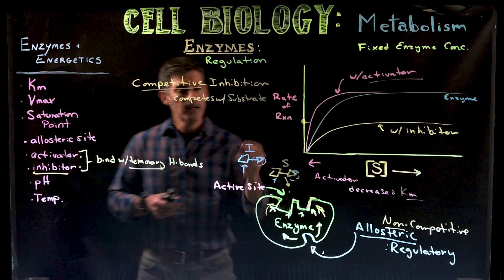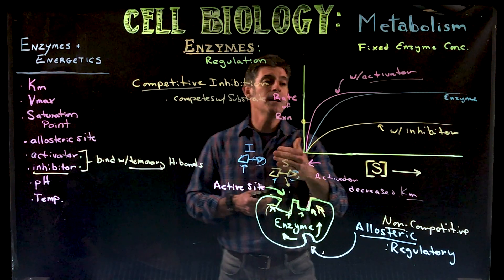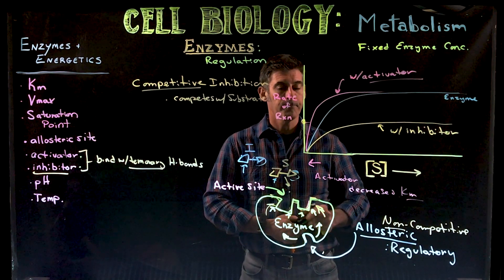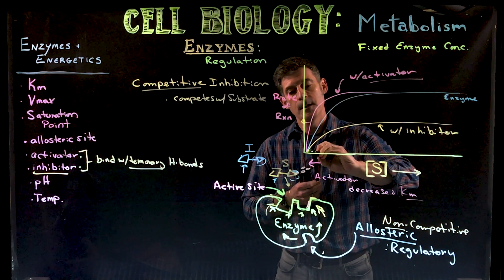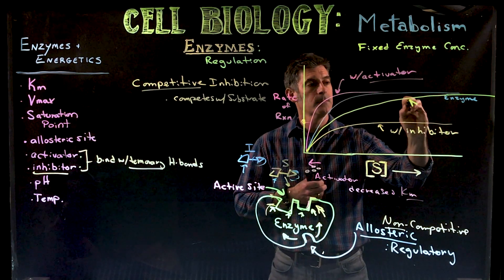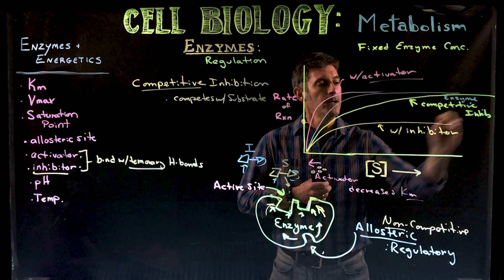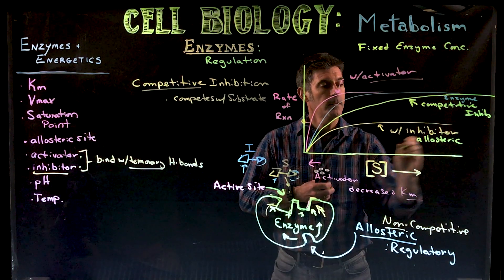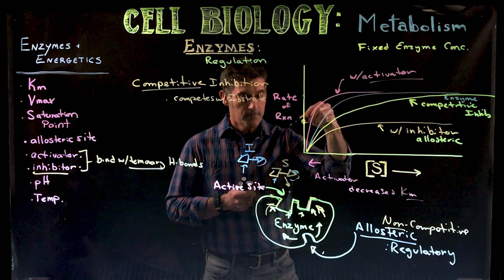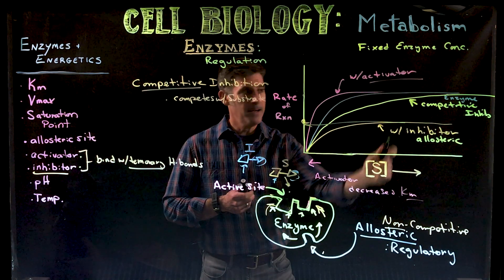What a competitive inhibitor would do is we would see a change in this curve that would look even a little bit different than these. With a competitive inhibitor we would see something that looks like this. So this would be the competitive inhibitor and this is the allosteric inhibitor. You can see the difference between the two. With the allosteric inhibitor here the Km is going to change, but also the overall Vmax is changed. So the Vmax has been dropped down.